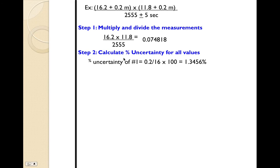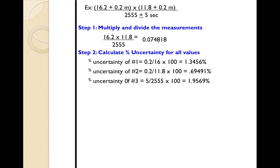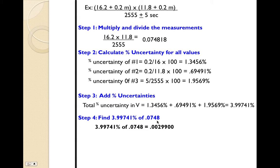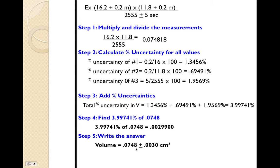Calculate the percent uncertainty for all values by taking the absolute uncertainty divided by the measurement, multiplied by 100. I get 1.3456% for the first measurement, 0.69491% for the second, and 1.9569% for the third. Step 3: add all the percentages to get 3.99741%. Find 3.99741% of 0.0748 — that's 0.0029900. So the answer is 0.0748 plus or minus 0.0030 centimeters cubed.